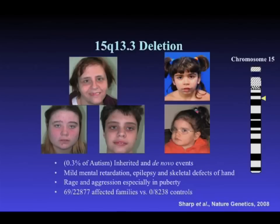A third example was a deletion we found more vexing and complicated. The critical region contained a nicotinamide acetylcholine receptor known as CHRNA7 — a wonderful candidate gene. But when we tested the index patient's parents, the deletion had clearly been inherited from the mother, who was reported as normal. We shelved this one, thinking it was just a rare variant not relevant to disease. Meanwhile, screening another 2,000 individuals, we found two additional sporadic cases. All three individuals suffered very severe seizures in addition to developmental delay.